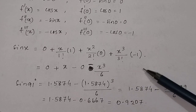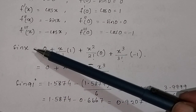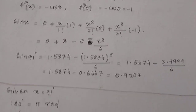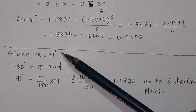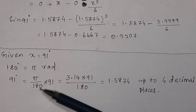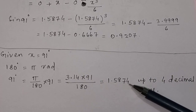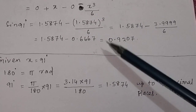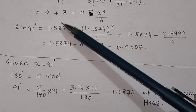To find the value of sin 91 degrees, the x value given is 91 degrees. We convert 91 degrees into radians. Since 180 degrees equals pi radians, 91 degrees equals pi divided by 180 multiplied by 91, which gives 1.5874 radians to 4 decimal places. We substitute this value of x into the expansion.